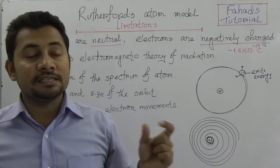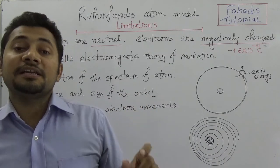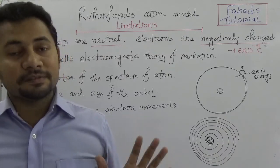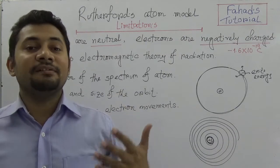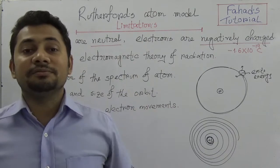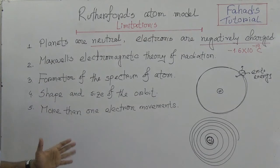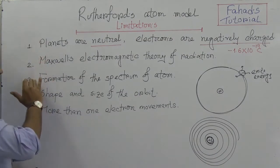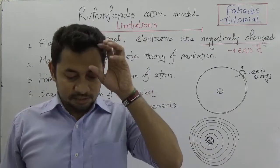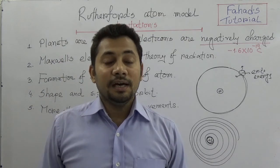Fourth: Rutherford did not give any idea regarding the size and shape of the orbit. Fifth: there is no clarification on how electrons move if there is more than one electron around the nucleus. These are the five limitations of Rutherford's model. I hope you understand and can keep these five points in mind to elaborate in your exam paper. See you in the next class, where I will be explaining the Niels Bohr atomic model.